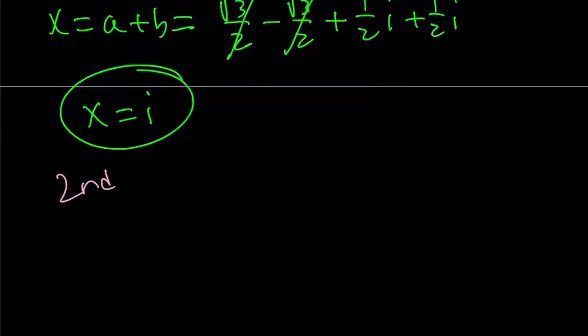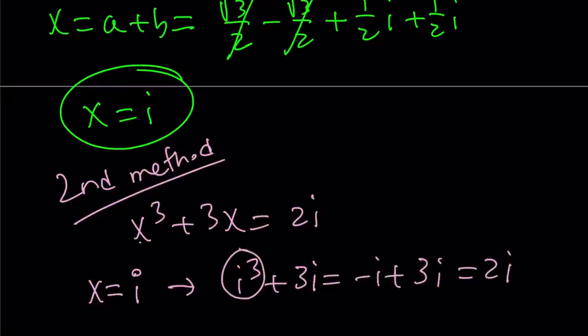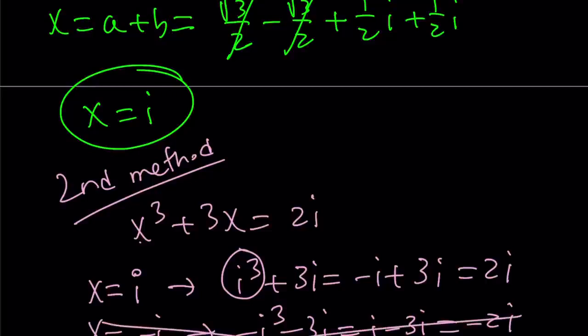So second method relies on guess and check. How does it work? I'm going to guess. Since the right-hand side is so simple and I have powers of x on the left-hand side, I'm thinking, can x be a power of i? Maybe x is equal to i to the power of something. It's probably either i or i³. Let's test i. If x is equal to i, then i³ + 3i becomes, because i³ is -i plus 3i, and that's equal to 2i. Awesome! So x equals i works.